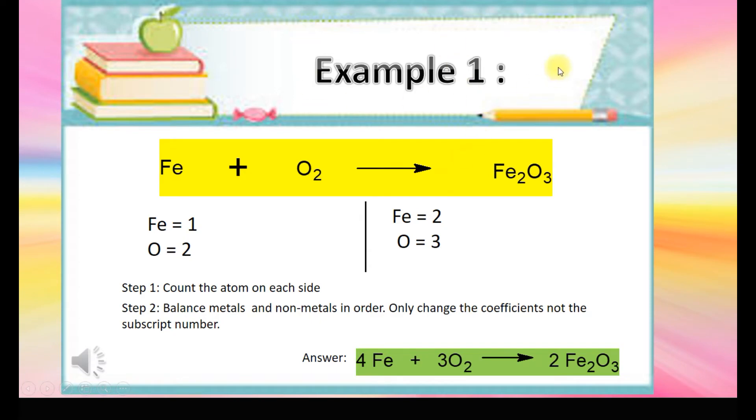Let's take a look at Example 1. First, count the atoms on each side. Iron is 1, oxygen is 2 on the left side, while on the right side iron is 2 and oxygen is 3.